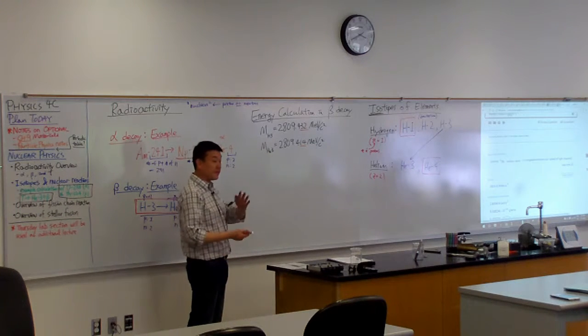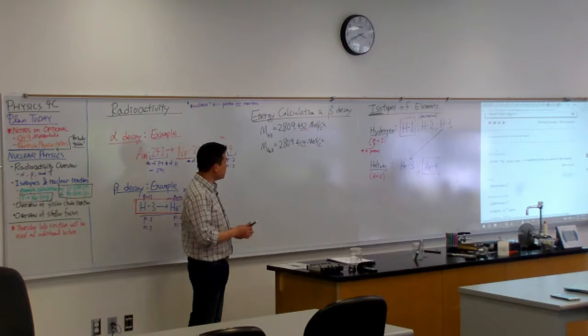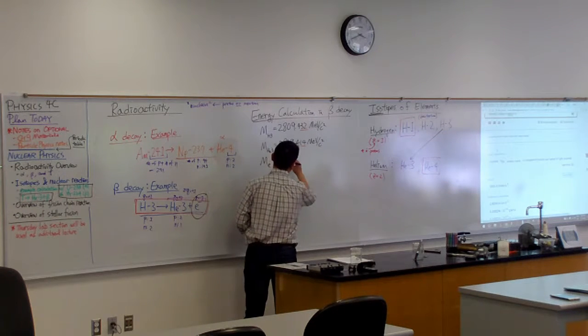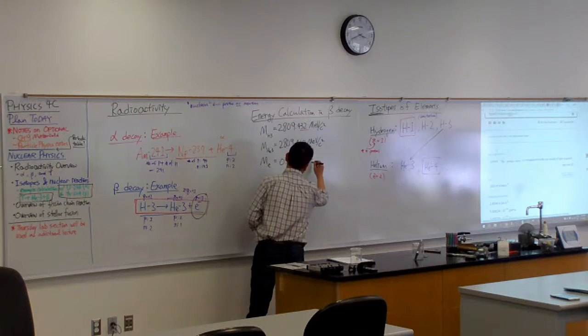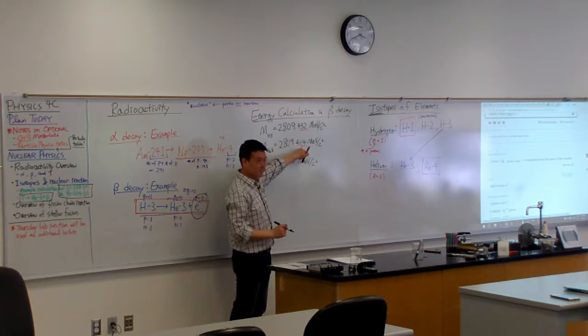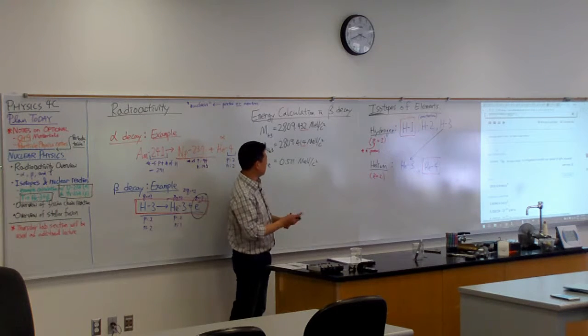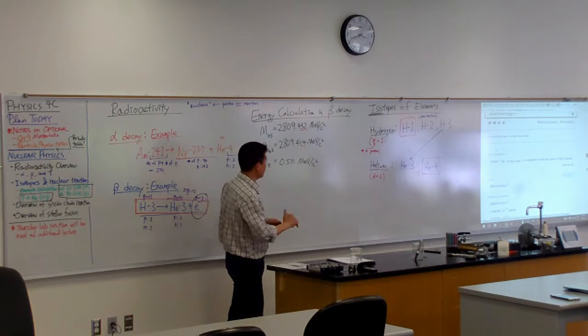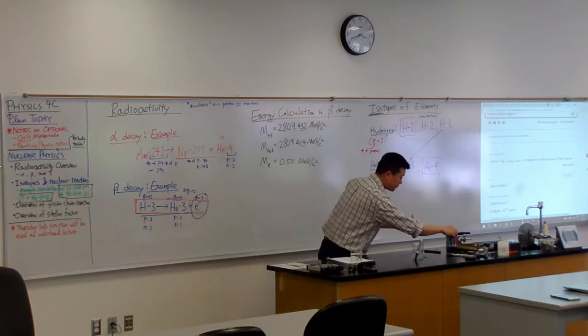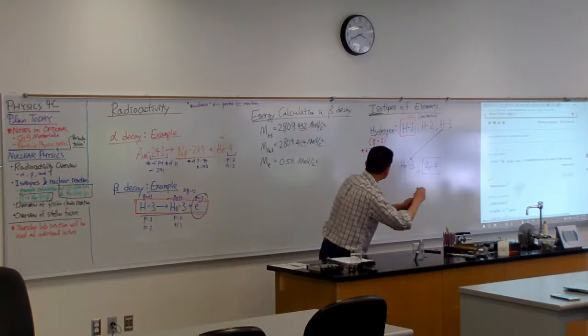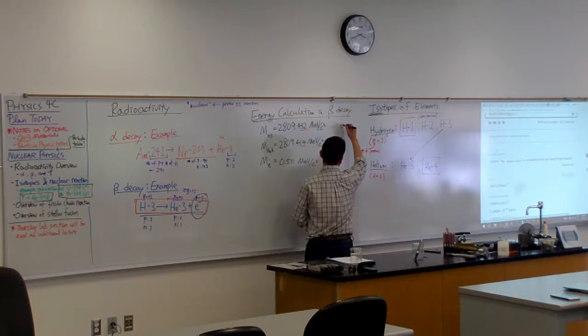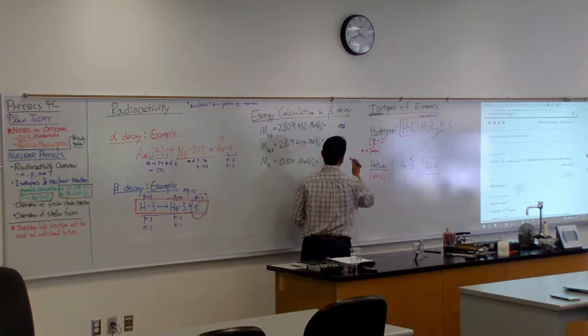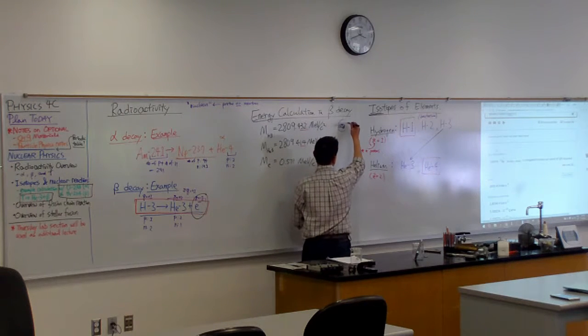That's where the energy released in the decay is coming from. But if you think about the mass of the electron, which is 0.511 MeV per c squared, then this difference is not enough, right? I've experienced this before, and this is why. When you look up tritium-3 mass, they are giving you the mass of this object: one proton, two neutrons in the center.